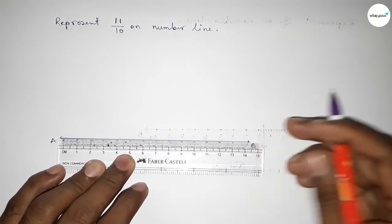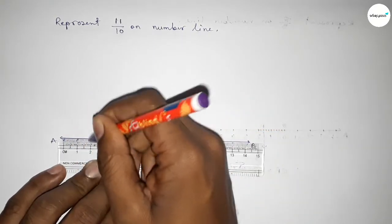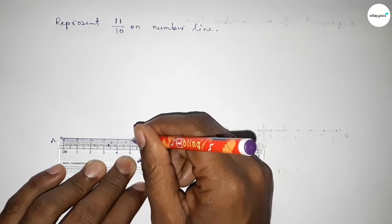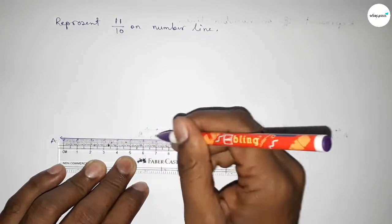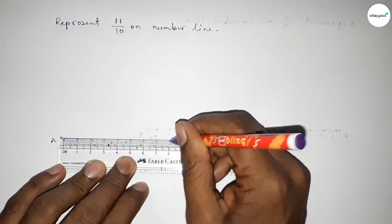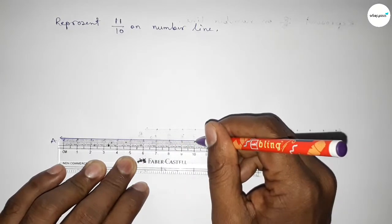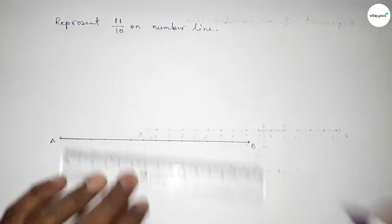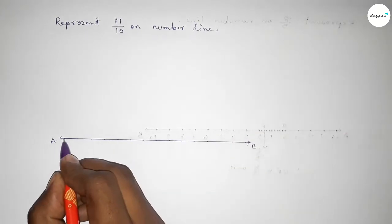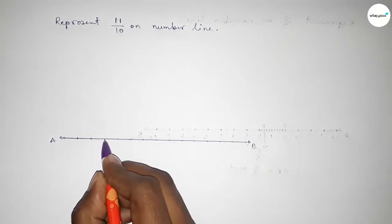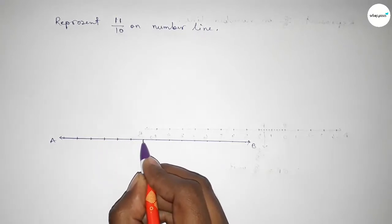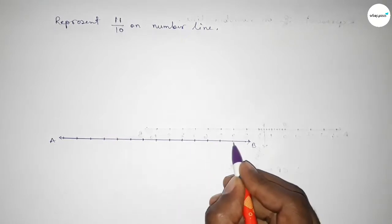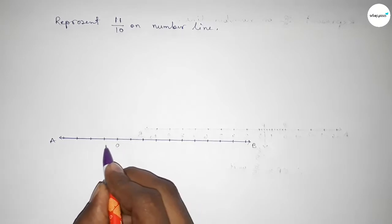Next we have to mark the numbers on the line by using scale. So first marking the numbers on the line by using scale by this way. First drawing here a number line. Again marking the numbers with deep color to understand perfectly.